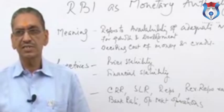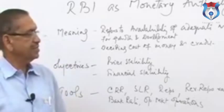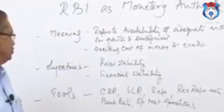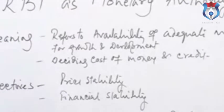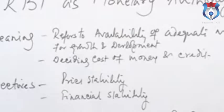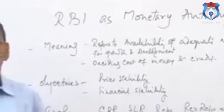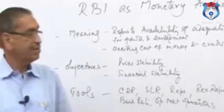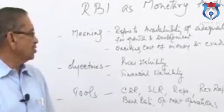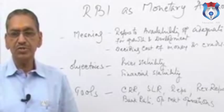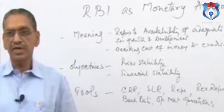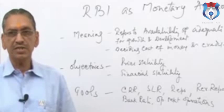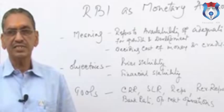The topic for discussion is the RBI as a monetary authority, discussed in three parts: meaning, objectives, and tools. The basic policy of the monetary authority — the Reserve Bank of India — is making available adequate money for growth and development. The Reserve Bank also decides the cost of money and credit and based on this announces its monetary policy. For announcing monetary policy, the Reserve Bank of India undertakes a review of the economy quarterly and in each quarter a mid-quarterly review, undertaking eight such reviews in total.